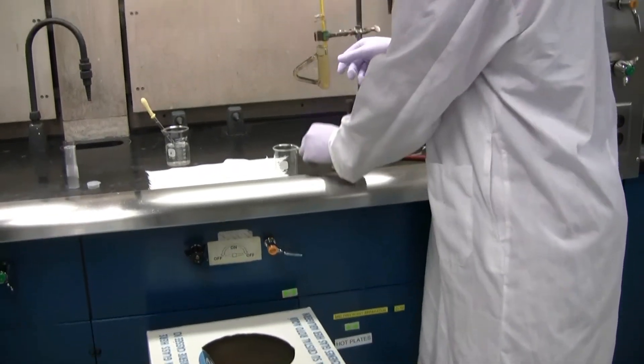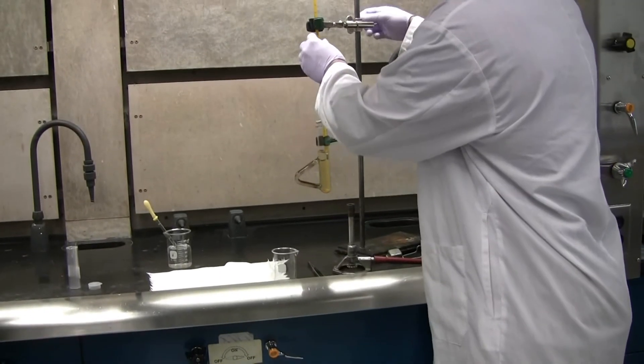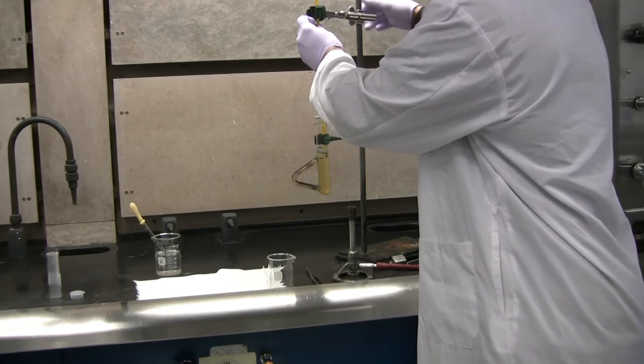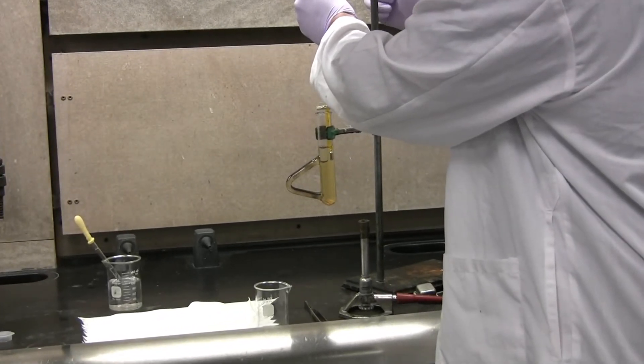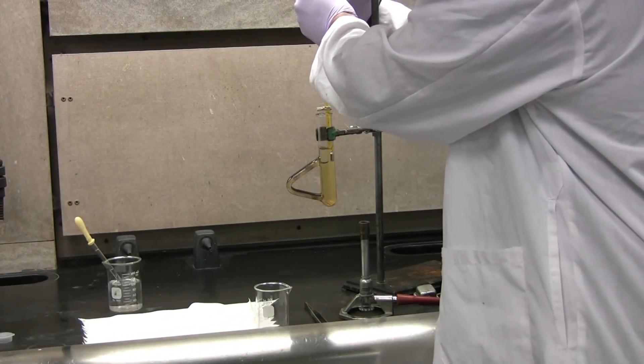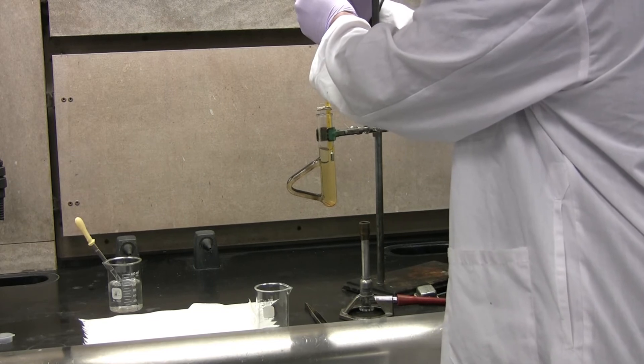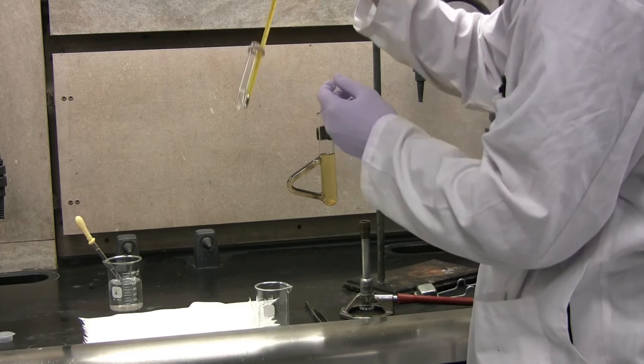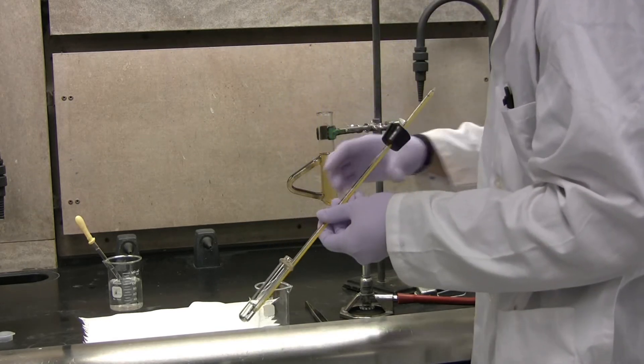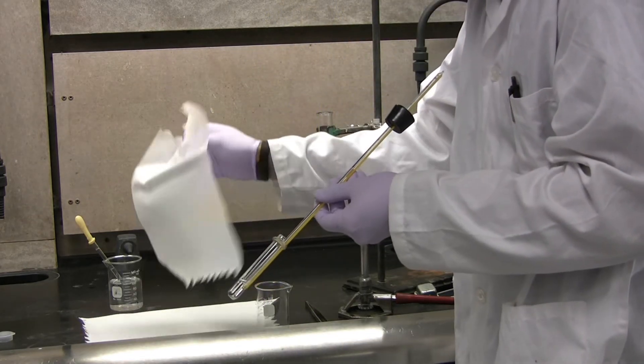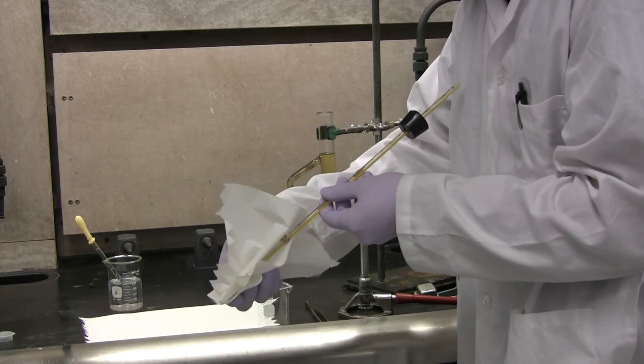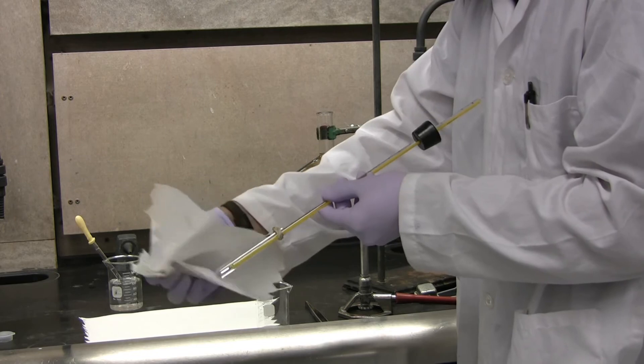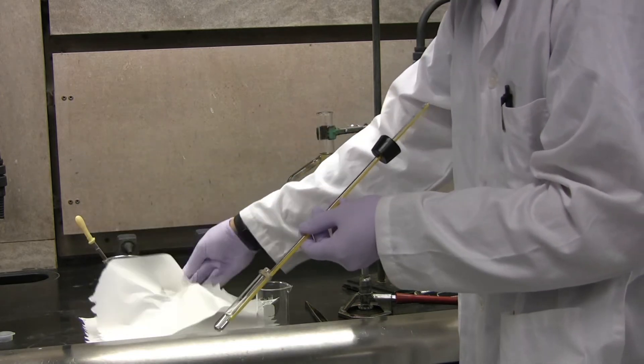The thermometer rig will be disassembled and removed from the clamp. Once removed, you will need to clean the bottom of the mercury thermometer and test tube with a paper towel. The rubber stopper will be removed.